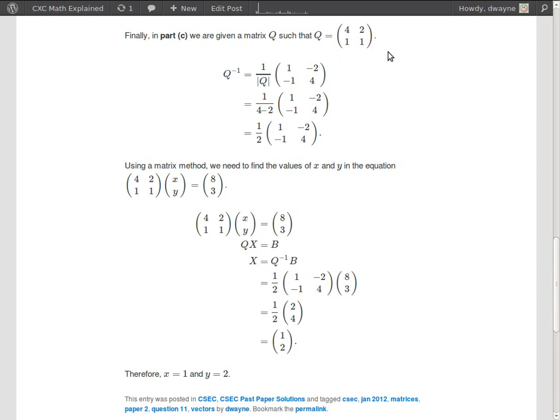Okay, so in general, if we're given a matrix Q equal A, B, C, D and the determinant of Q is not equal to 0 then the inverse of that matrix is equal to